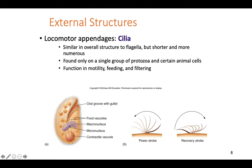Another way eukaryotes move is using an apparatus called cilia — essentially a tiny flagella that moves in a stroking pattern, back and forth. When they pull in one direction, they can pull food into the organism's oral groove. They can also push the organism around in the environment. Cilia are tiny, work similarly to flagella, are found all over the organism, and are only found in eukaryotes — no prokaryotic cells have cilia.